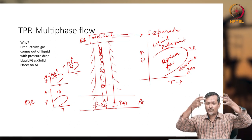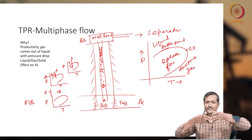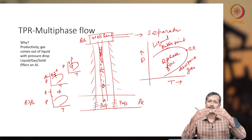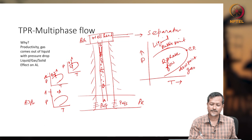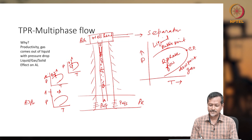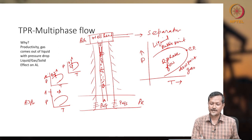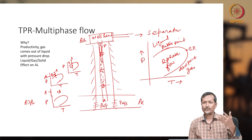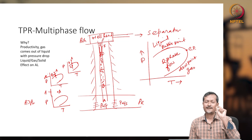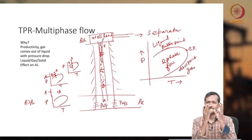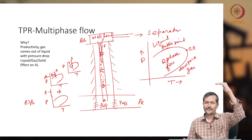In annular flow, liquid soaks the wall and gas creates an annular space at the center. If gas velocity increases further, the wall-soaking fluid breaks into lots of small droplets — fluid bubbles are created. Initially there were gas bubbles (B to C), then further gas bubbles (C to D), then annular flow (D to E), and finally when reaching the wellhead (E to F) you get mist flow, where liquid particles separate and mix with gas.